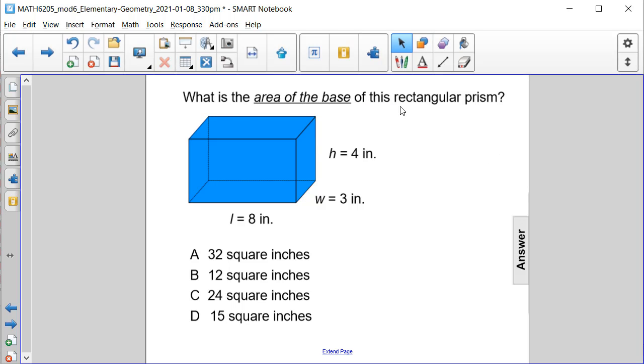What is the area of the base of this rectangular prism? Is it A, 32 square inches? Is it B, 12 square inches? Is it C, 24 square inches? Or is it D, 15 square inches?